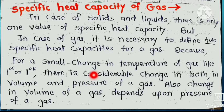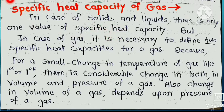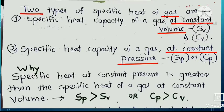Why is it necessary to define two specific heats of a gas? In case of solids and liquids, there is only one value of specific heat capacity. But in case of a gas, it is necessary to define two specific heat capacities. Because for a small change in temperature of a gas, like 1 degree centigrade or 1 degree Kelvin, there is considerable change in both volume and pressure. Also, change in volume of a gas depends upon the pressure of a gas. Therefore, there are two types of specific heats of a gas.